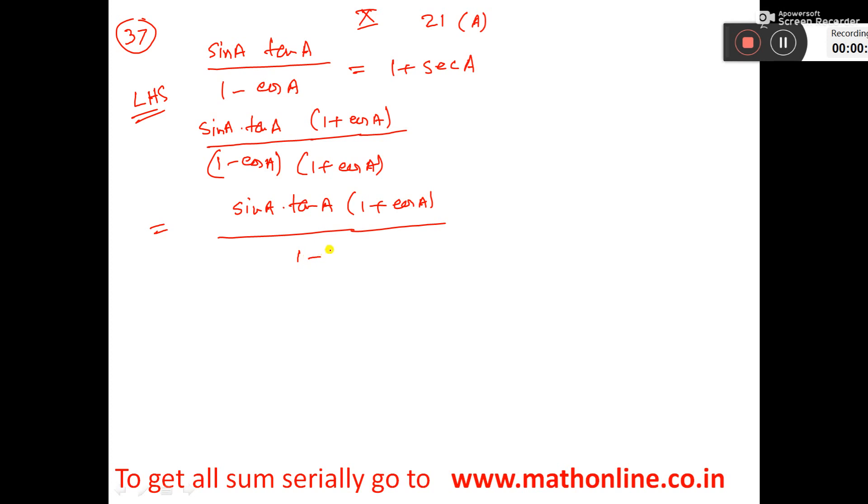Now, 1 minus cos²A, that will be sine²A. So here, sine A you keep, tan A you break down sine A by cos A.